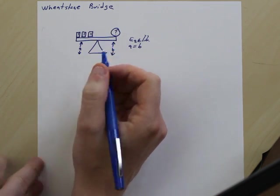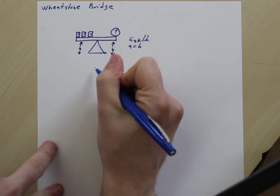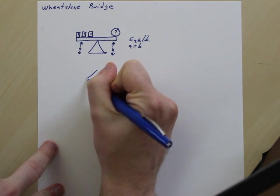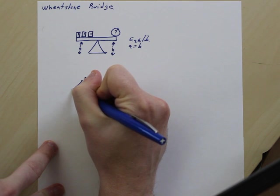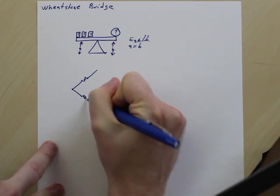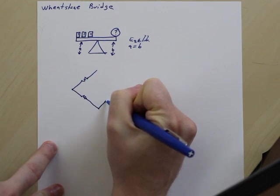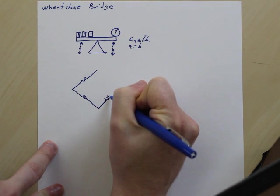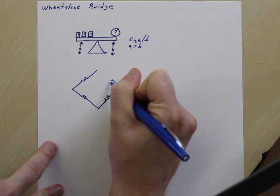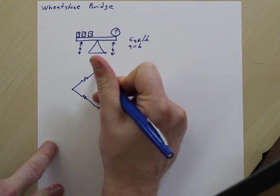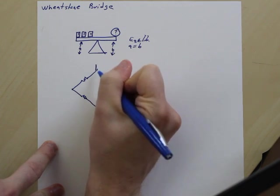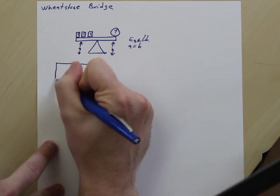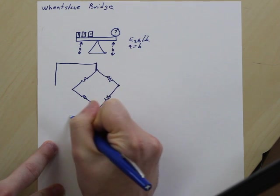So if we draw the Wheatstone bridge out, we're going to get a circuit that looks like this is the traditional way of drawing it. And again, you can have more planar circuit, you can have something that looks a little different without the diagonals. And then we're going to have this go over here, this go over here, and this go over here, and this go over here.